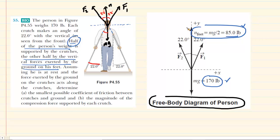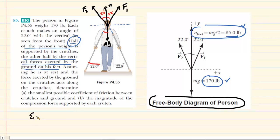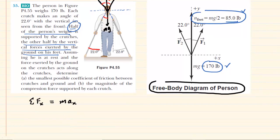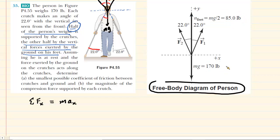Our next step is to apply Newton's second law to the free body diagram. We have to do this in two different directions. First, we'll apply it in the x-direction: the sum of the forces in the x-direction equals mass times acceleration in the x-direction. To find the x-direction forces, we draw in the components. Looking at F1, the y-component points straight up and the x-component points to the right. We'll label them F1y and F1x.